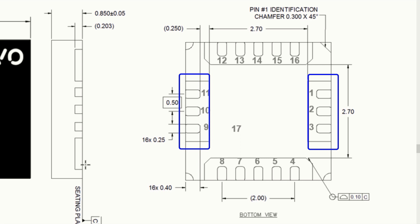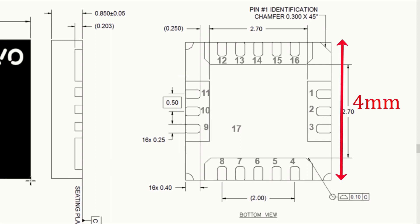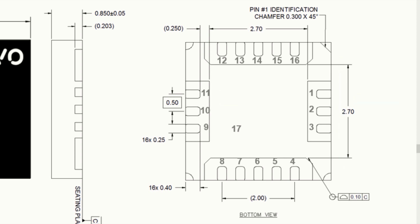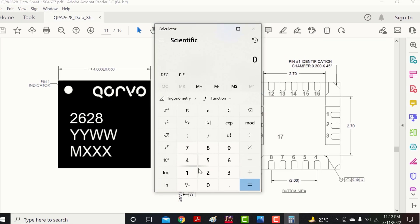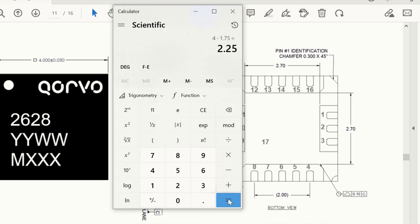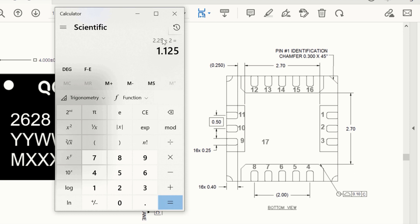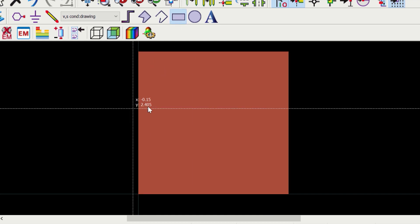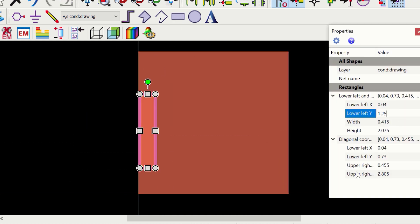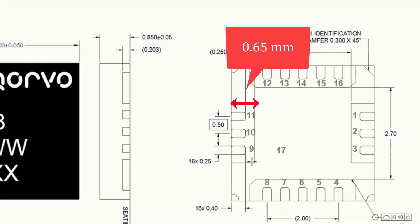First of all, make these cutouts. Observe the total height is 4 mm. Thickness of each pin is 0.25 mm and gap is also 0.25 mm. So the total height of cutout would be 1.75 mm. Subtract 1.75 from 4 and divide it by 2. Thus the lower left Y would be 1.125. The width is 0.125 mm and the width is 0.65 mm.